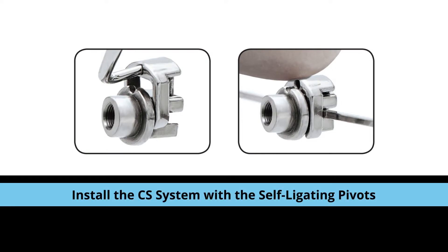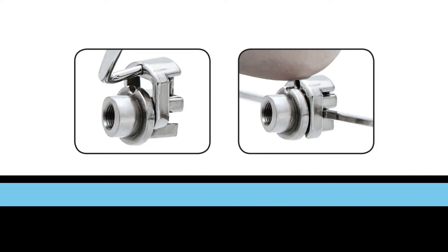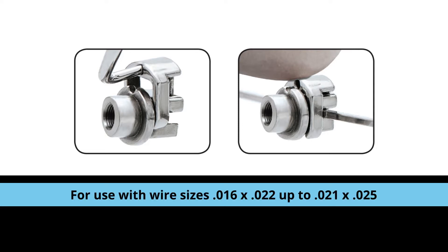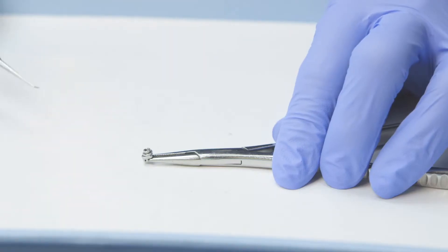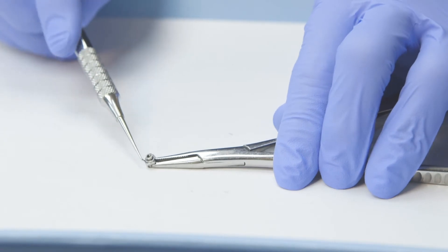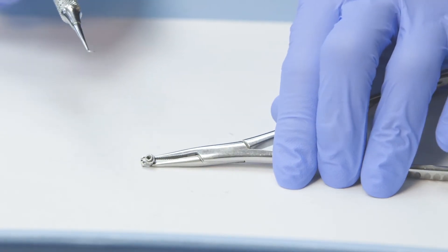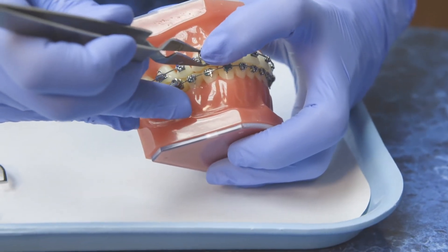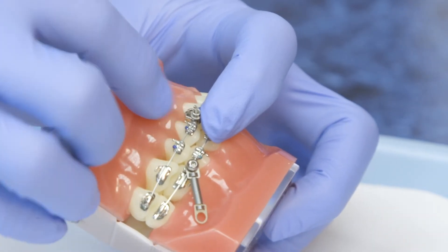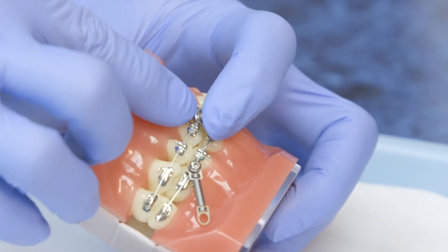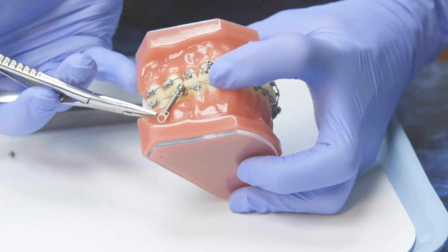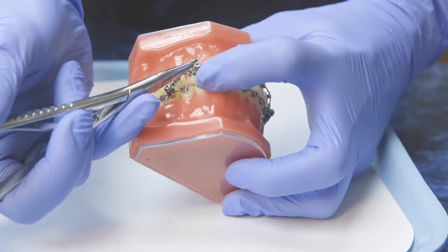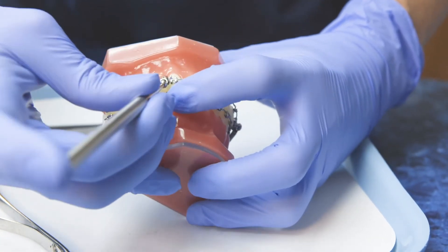Now, let's move on to installing the CS system with the self-ligating pivot. The self-ligating pivots are for use on wire sizes 016 by 022 up to an 021 by 025. Using the self-ligating tool, gently pull the door of the self-ligating pivot into the open position. Place the self-ligating pivot onto the arch wire using your bracket placing tool and close the door using your fingertip by a gentle push. From here, you will simply place the CS springs over the pivot and secure the screw into place using your Allen pencil.